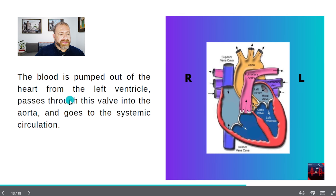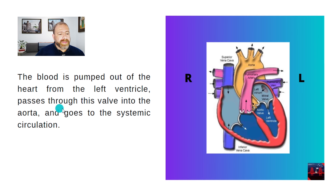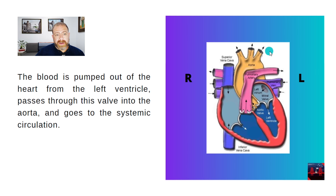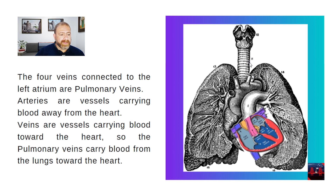The blood is pumped out of the heart from the left ventricle, passes through this valve into the aorta, and goes to the systemic circulation. The four veins connected to the left atrium are pulmonary veins. Arteries are vessels carrying blood away from the heart.